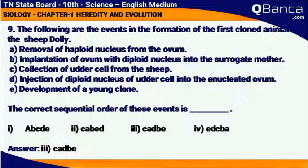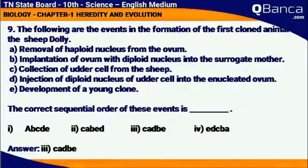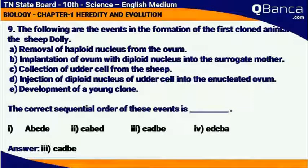The following are the events in the formation of the first cloned animal, the sheep Dolly: removal of a haploid nucleus from the ovum; implantation of the ovum with diploid nucleus into the surrogate mother; collection of udder cells from the sheep; injection of the diploid nucleus of the udder cell into the enucleated ovum; development of an identical clone. The correct sequential order of these events is C, A, T, B.